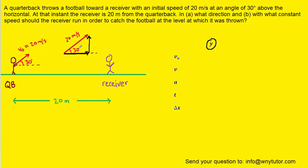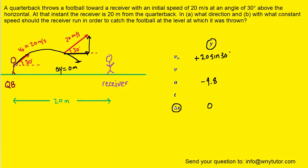We can see that this y component is opposite the 30 degree angle, and because it's opposite, we would use the sine. Therefore, the initial velocity becomes 20 times the sine of 30 degrees. Note that the initial velocity in the y direction is pointing up, and therefore should be positive. In the y direction, the acceleration is negative 9.8 meters per second squared because of gravity. Now let's also consider the displacement in the y direction. As the football moves up and then travels back down to its original height, the displacement in the y direction is actually going to be 0 meters, because the ball is returning back to the same height at which it was thrown.